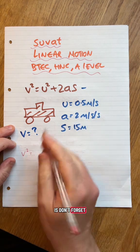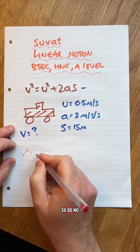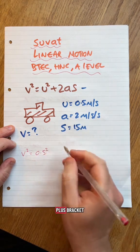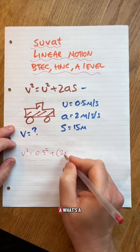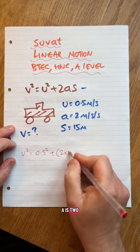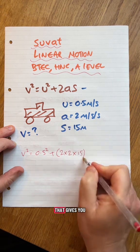So V squared is, don't forget, U squared. U is starting, so do 0.5 squared plus bracket, 2 times A. What's A? A is 2. S is 50. That gives you that.